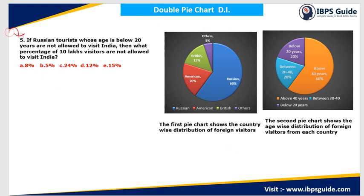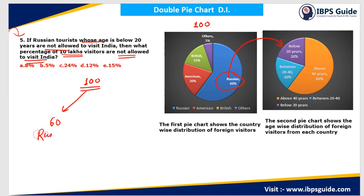Question 5: If the Russian tourists whose age is below 20 years are not allowed to visit India, then what percent of the total 10 lakh visitors are not allowed to visit India? First, if total visitors is 100%, then 60% of that is Russian — that's 60 people out of every 100. Out of the Russian visitors, 20% are below 20 years of age. So 20% of 60 is 12. So 12% of the total foreign visitors are not allowed to visit India.